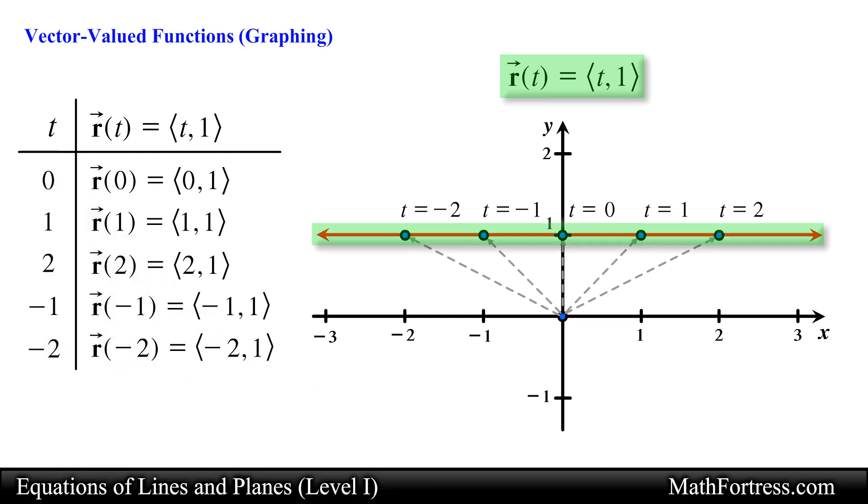Doing that, we obtain the following graph. Notice that in this sketch the position vector is drawn as a gray dashed arrow for various values of t. Typically we write the value of t above each point on the graph of a vector function. This way we can specify the value of t that was used for each evaluation. Taking a look at the graph, we see that this vector function is nothing more than the equation of a horizontal line y equals 1.